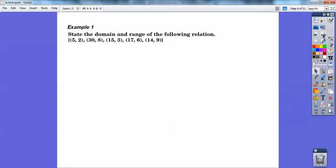So state the domain and the range of the following relation. So you got 5, 2, 38, 15, 3, 17, 6, and 14, 9. The domain is all the first numbers: 5, 30, 15, 17, and 14. And the range is all the second numbers. So there's the answer.